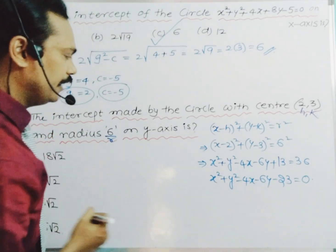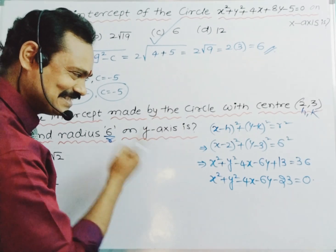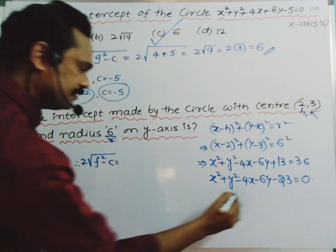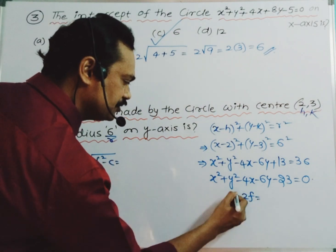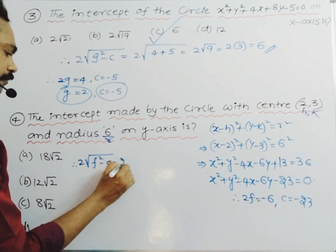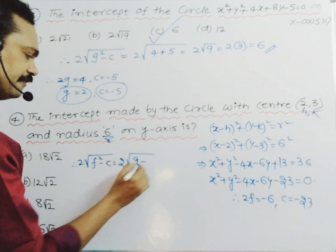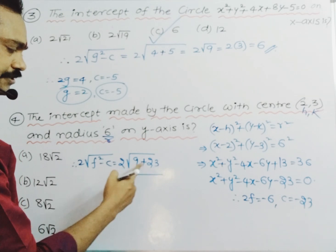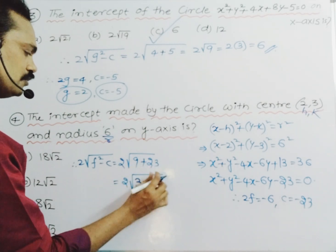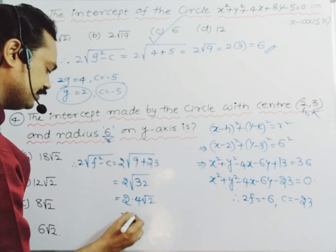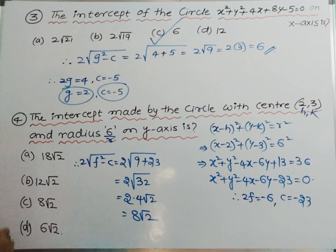To find the intercept on the y-axis, the formula is 2√(f² - c). From the equation, 2f = -6 so f = -3. f² = 9 and c = -23, so f² - c = 9 + 23 = 32. Therefore the intercept is 2√32 = 2 × 4√2 = 8√2. Option C is the right choice.